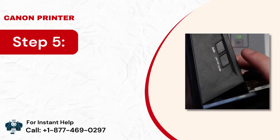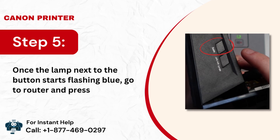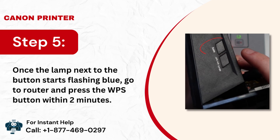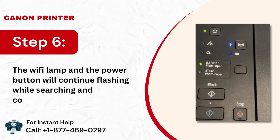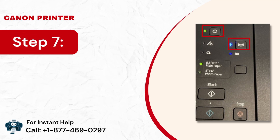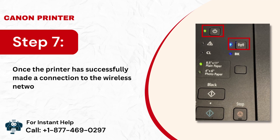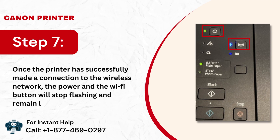Step 5: Once the lamp next to the button starts flashing blue, go to the router and press the WPS button within 2 minutes. Step 6: The Wi-Fi lamp and the power button will continue flashing while searching and connecting to the router. Step 7: Once the printer has successfully made a connection to the wireless network, the power and the Wi-Fi button will stop flashing and remain lit.